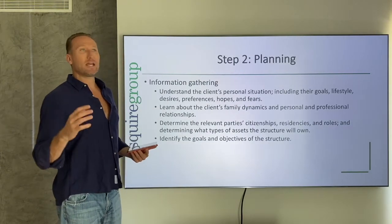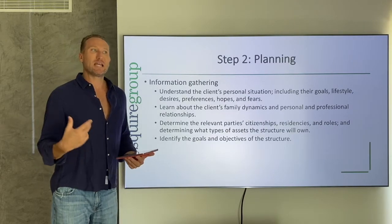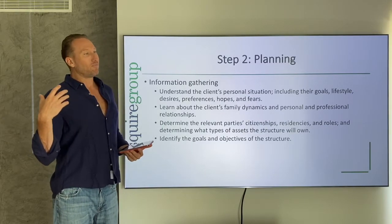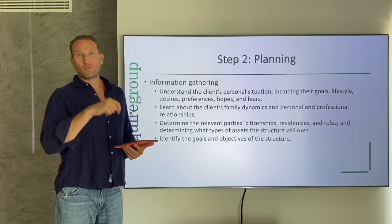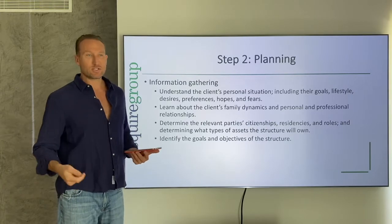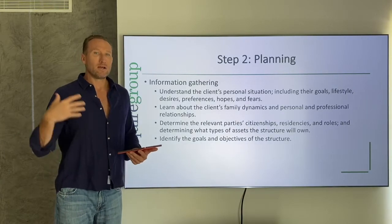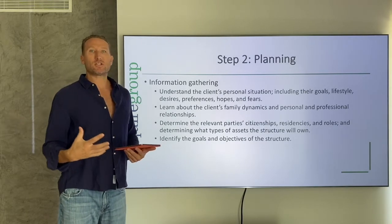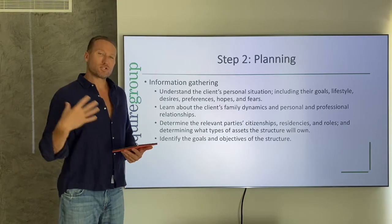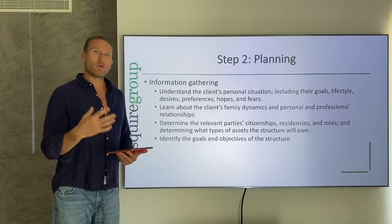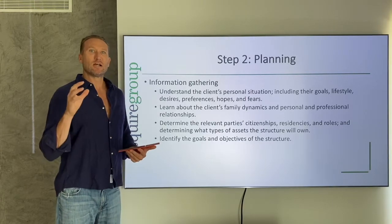Once we've done the education, we move on to planning. The first step is information gathering. So many advisors just have a simple questionnaire asking who your kids are, where do you live, what are your citizenships — and we have those questionnaires too, but we go far beyond that. We do a lot of information gathering in person and on calls because I need to understand the person's situation in order to pick the right jurisdiction, the right structure, and the right provisions for them.